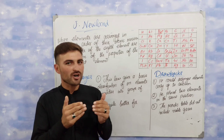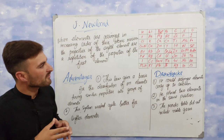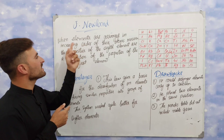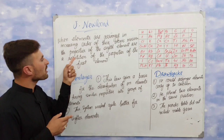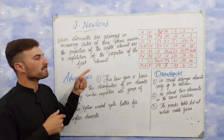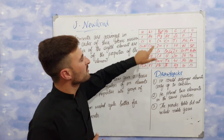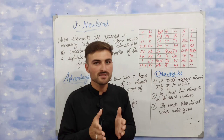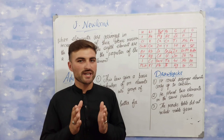He said that if you arrange the elements in increasing order of atomic masses, then the properties of the 8th element are a repetition of the properties of the first element. The 8th element will have properties just similar to the first one. Let's give a few examples so that our concept gets clear.